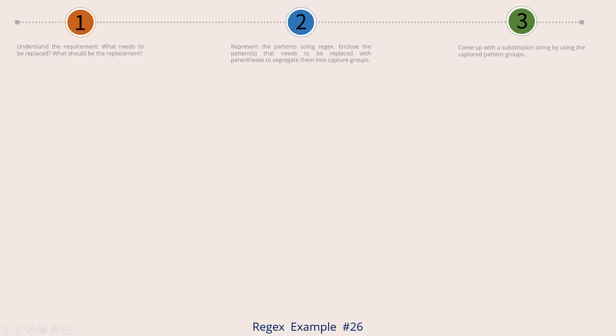This is example number 26 and our second example for find and replace. Here is our input file. To the right of each input string, I have given an arrow symbol and shown what the string should look like after the replacement is done.